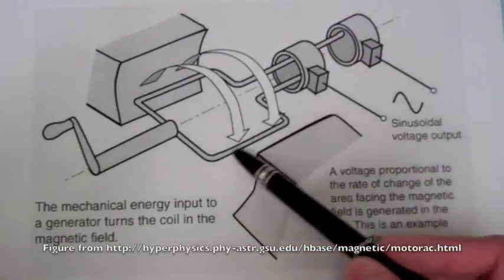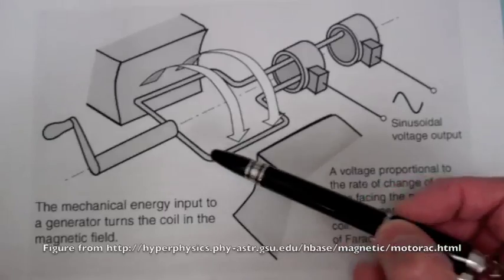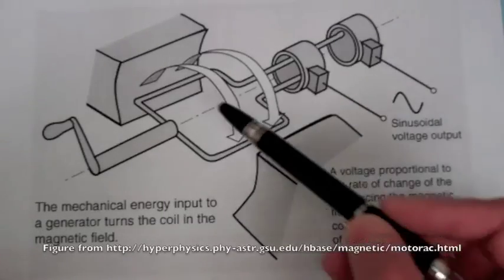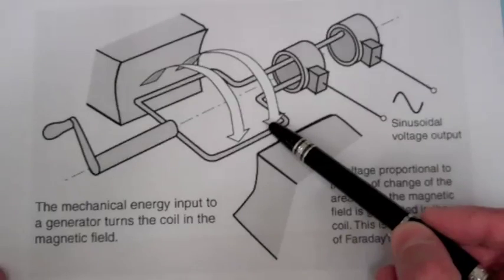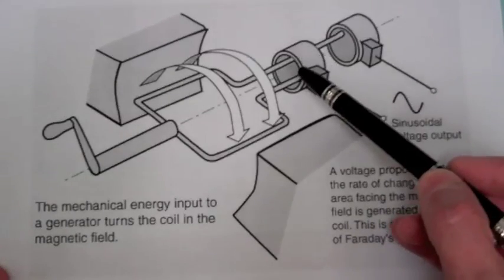This is our coil which we can rotate. So this coil rotating in this fixed magnetic field will result in a changing magnetic flux inside the coil which will produce our AC voltage.